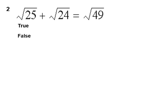Question two, the square root of 25 plus the square root of 24 is equal to the square root of 49. Is that true or false?